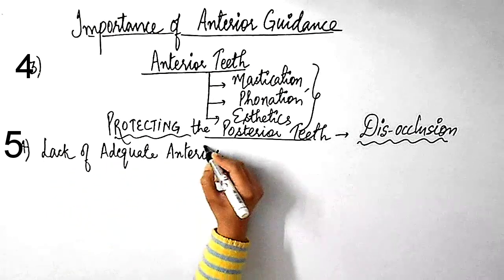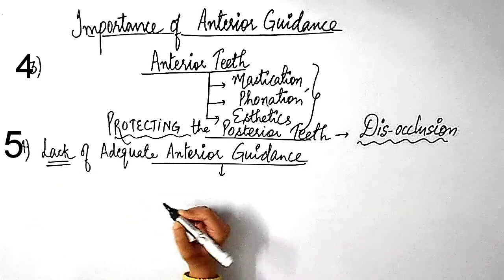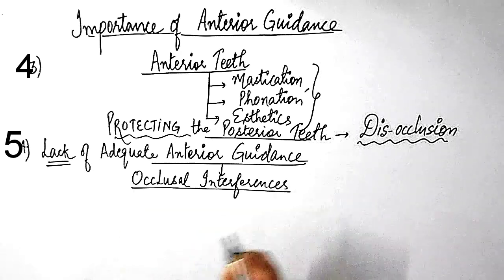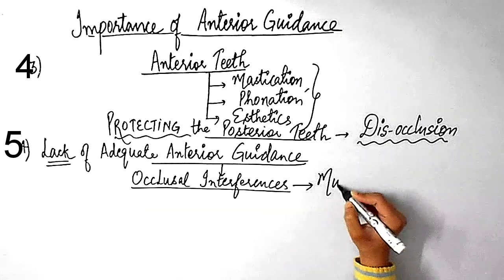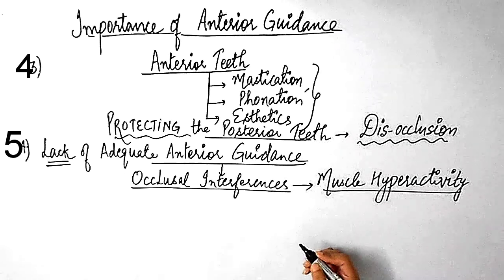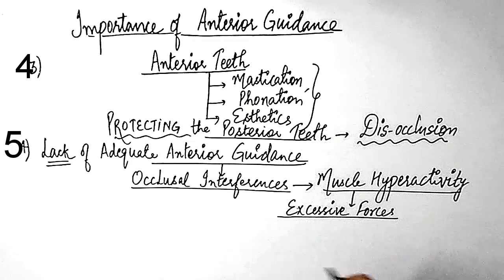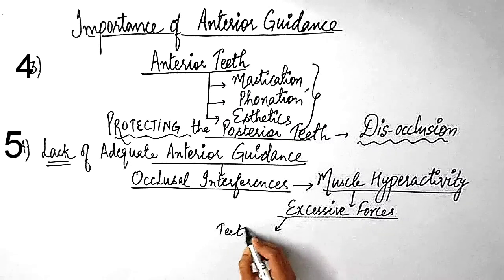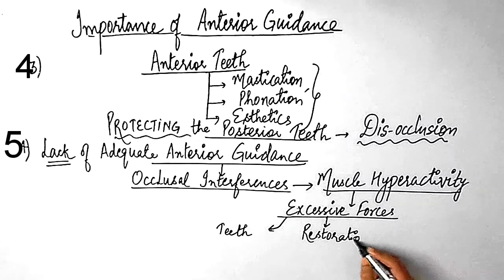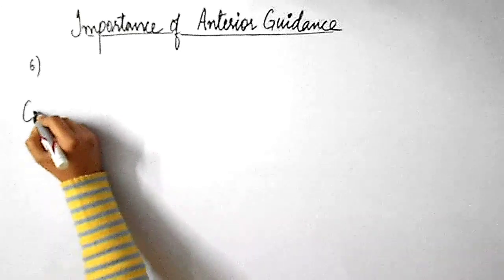When there is a lack of adequate anterior guidance, it results in occlusal interferences in the posterior teeth, which are highly undesirable. Such occlusal interferences may cause muscle hyperactivity, hence generating excessive forces not only on teeth and restorations but also on the temporomandibular joints.